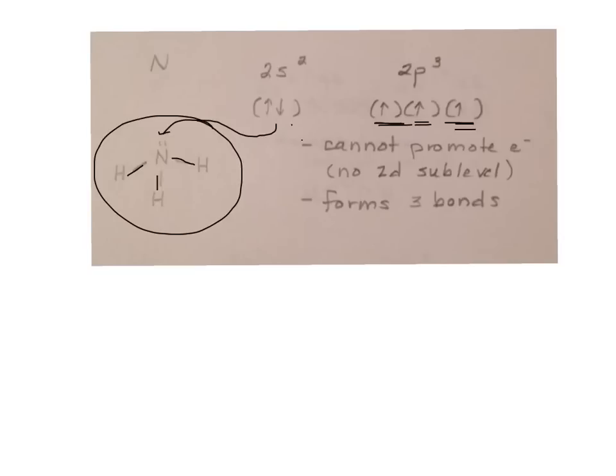It would like to promote this electron to a higher energy level. But there's no such thing as a 2d. So there's no place for it to put it. It cannot promote any electrons. It forms three bonds, no hybridization, no promoting, no nothing.